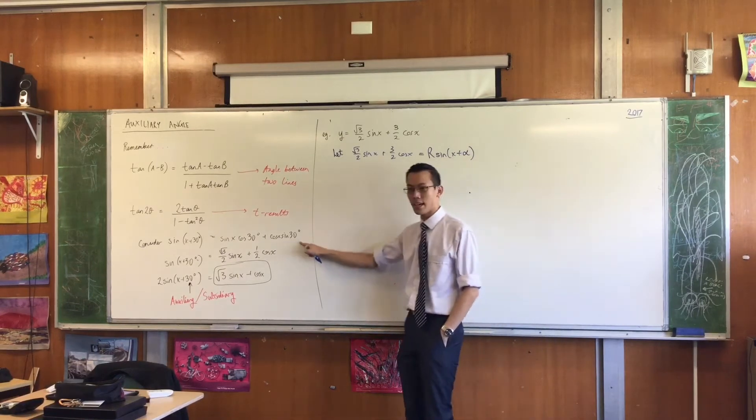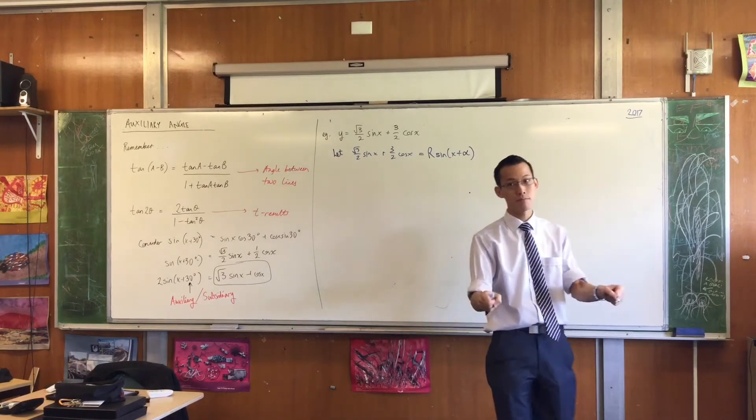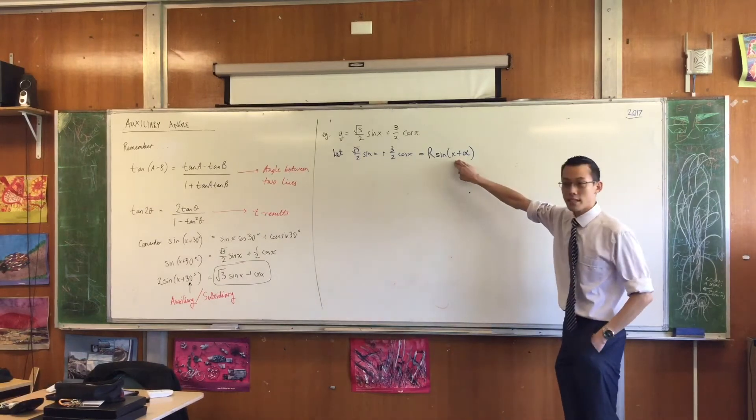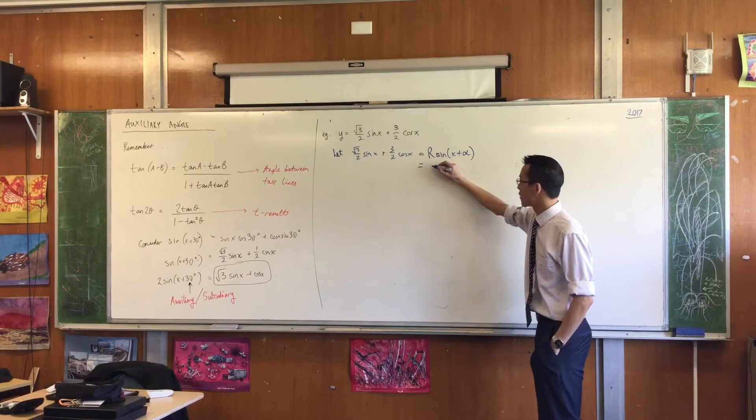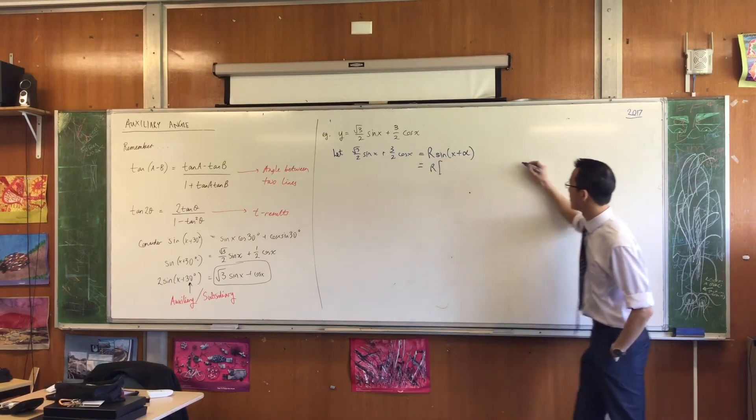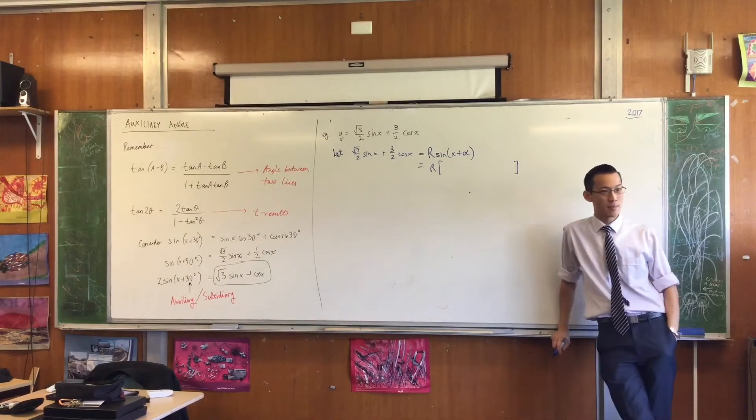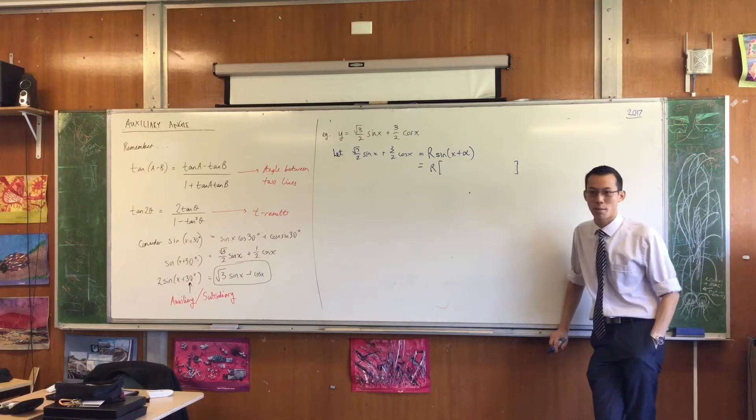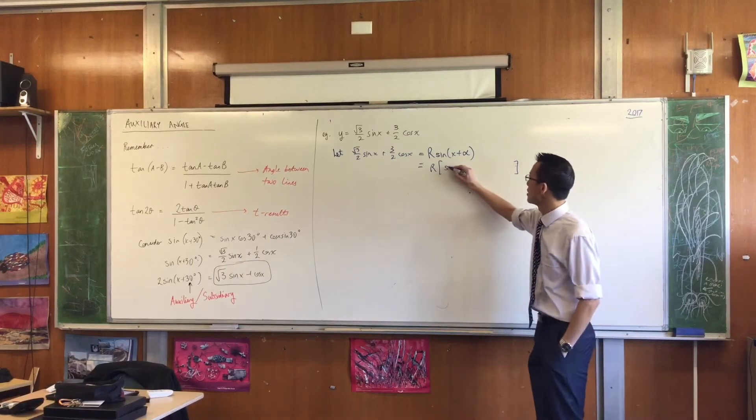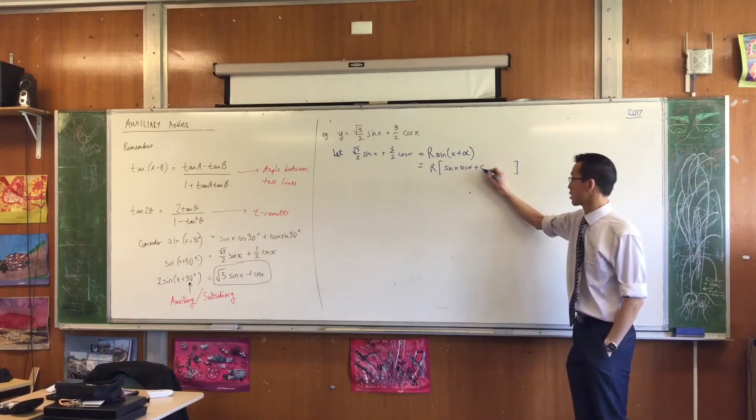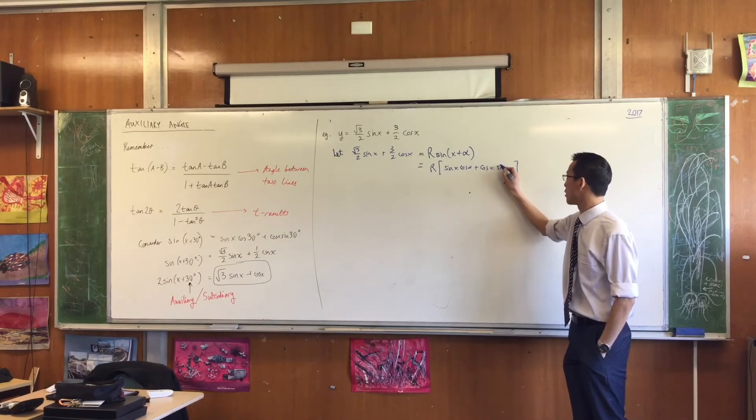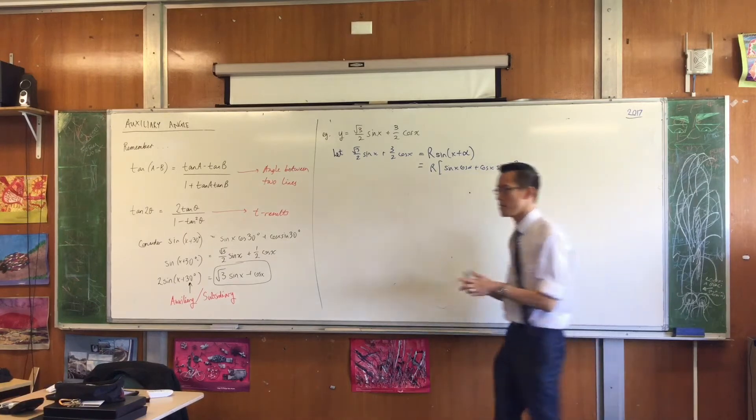So just like we did here, I'm going to use my trig expansion for this and see what happens. If I expand this out, I've got an R right out the front, and then I'm going to have this big long expansion in the middle. What am I going to have? sin x cos α + cos x sin α. By the way, I missed something. I'm introducing this whole new function. I don't know what the amplitude will be, I don't know what the phase will be, but I'm going to find them.